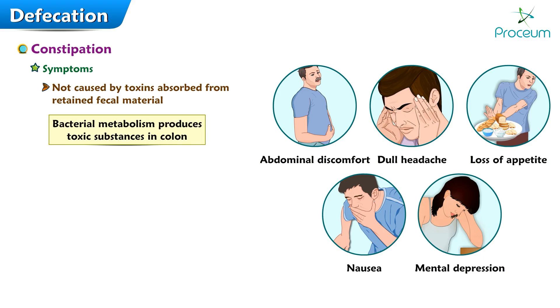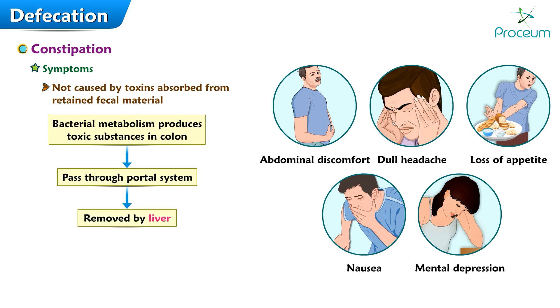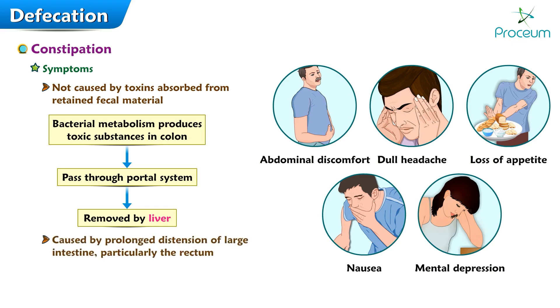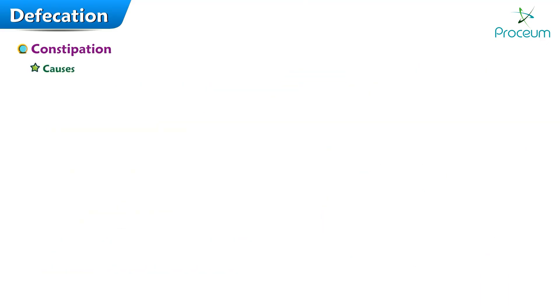Although bacterial metabolism produces some potentially toxic substances in the colon, these substances normally pass through the portal system and are removed by the liver before they can reach the systemic circulation. The symptoms associated with constipation are caused by prolonged distension of the large intestine, particularly the rectum. The symptoms promptly disappear after relief from distension.